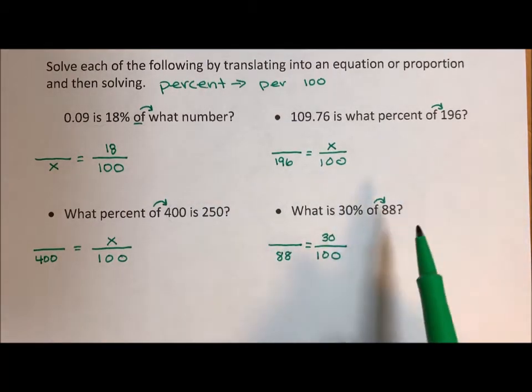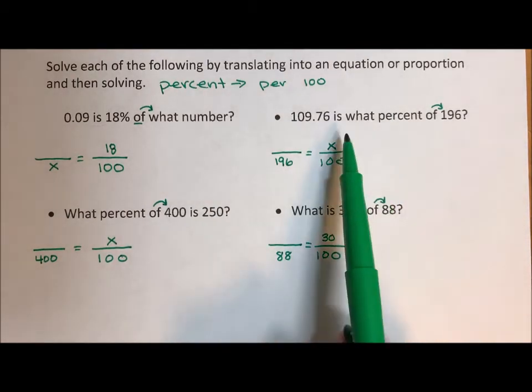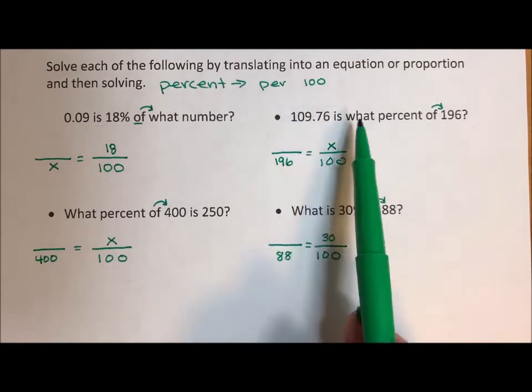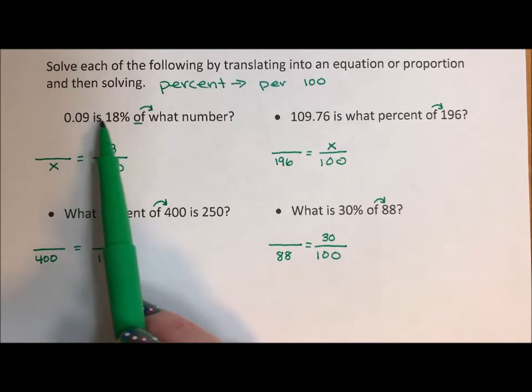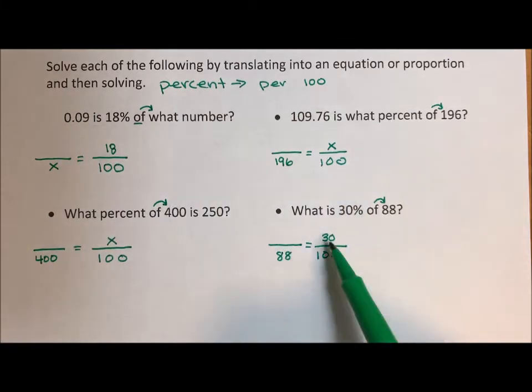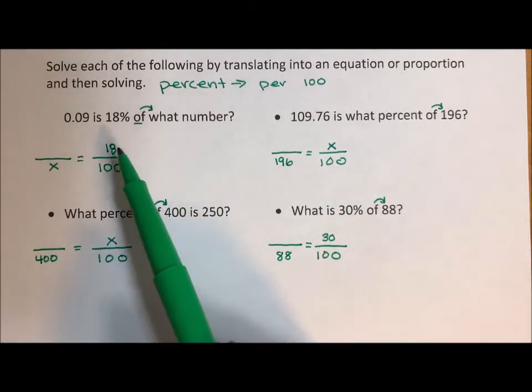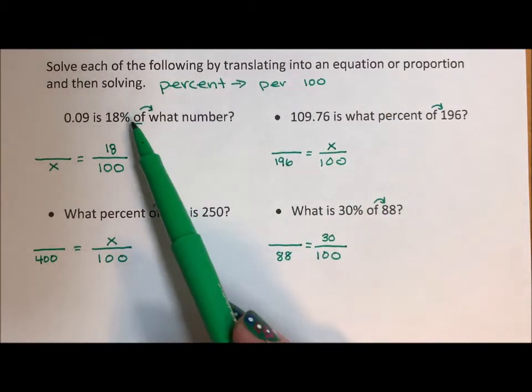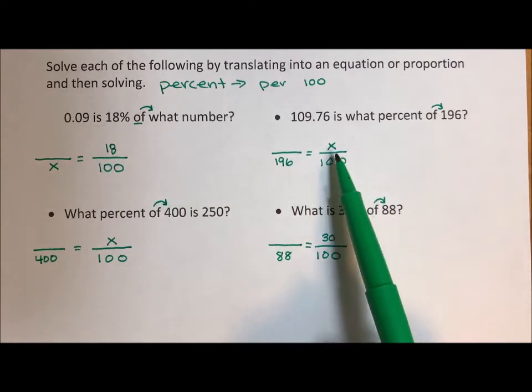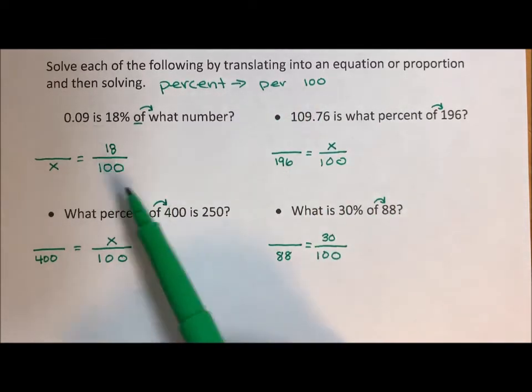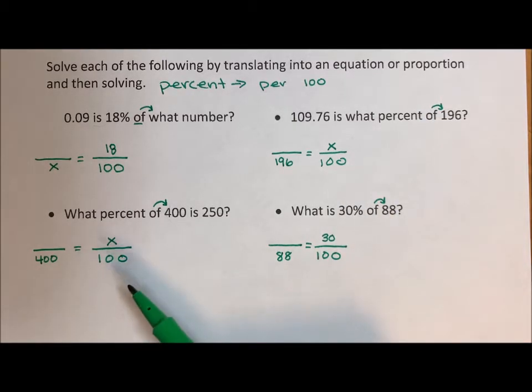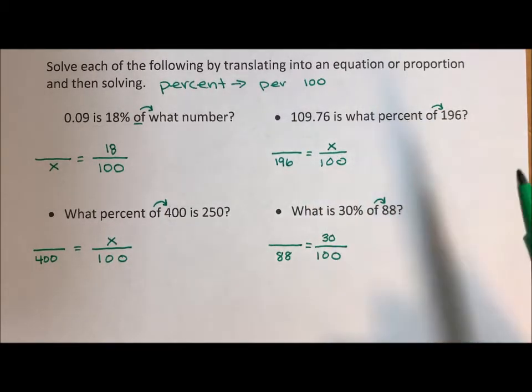Often you hear is over of. The reason I don't like that is the number around the word is can be before or after, and that can be kind of confusing. So I fill in those three numbers first. The 100 first because the 100 has to be a denominator. Then the percent has to go with the 100 because it's per 100. Then whatever comes after the word of is the other denominator.